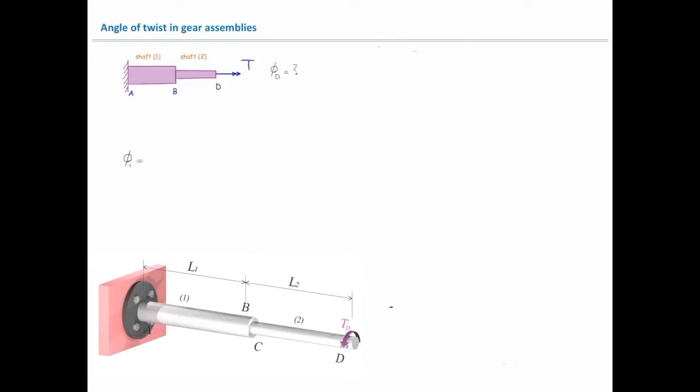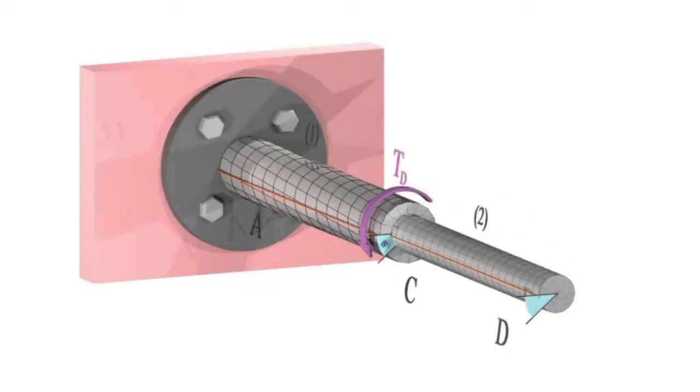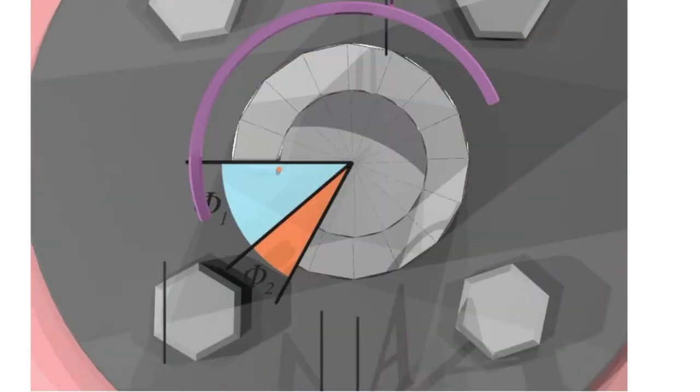Twist in element number 1 is TL over GJ. Similar to that, twist in the second element will be TL over GJ. How much would be the total twist at the end? In this case, point D is connected to point A by these two elements, so I need to add them together. So phi at D is phi 1 plus phi 2.